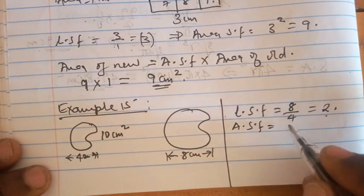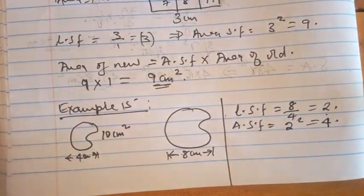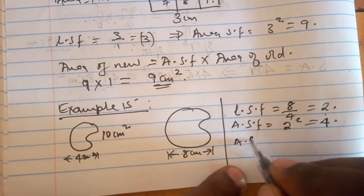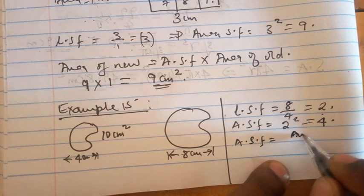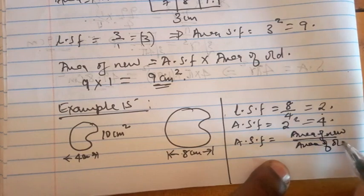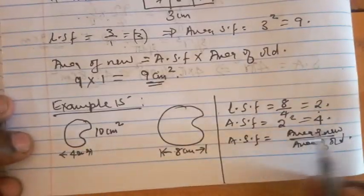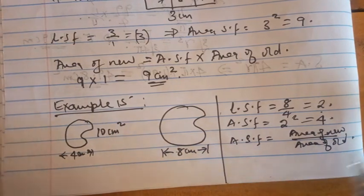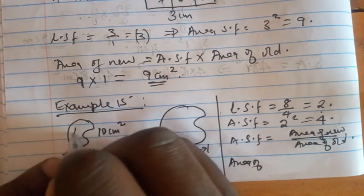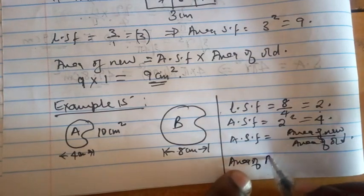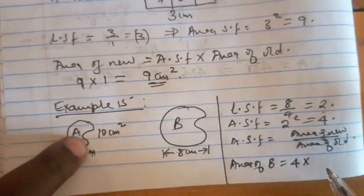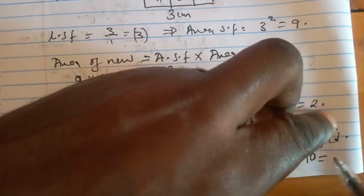The area scale factor is also given by the area of the new over the area of the old. Therefore, the area of shape B is the area scale factor times the area of shape A, which is four times ten, giving us 40 centimeters squared.